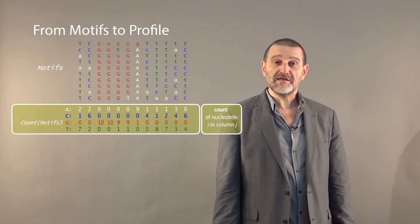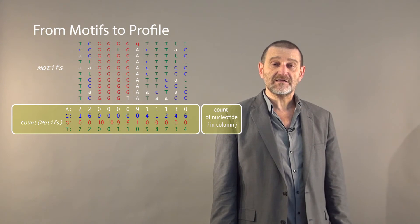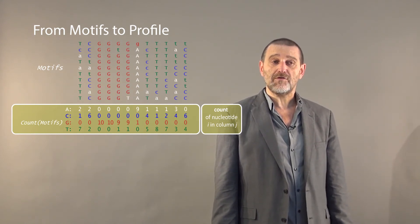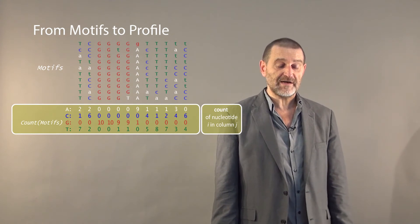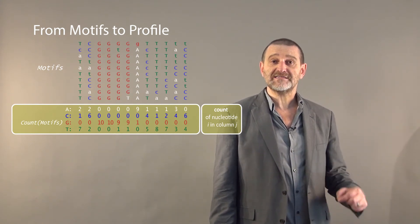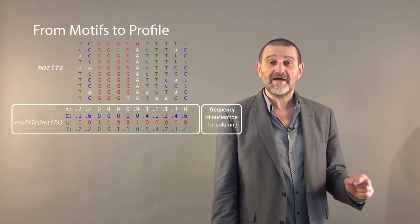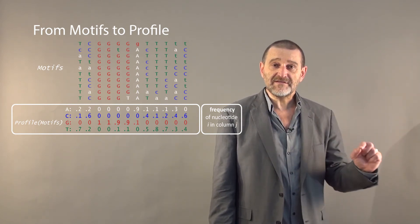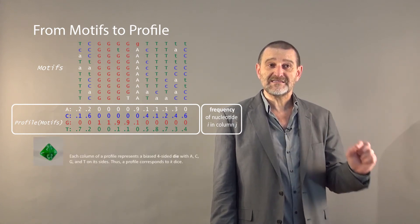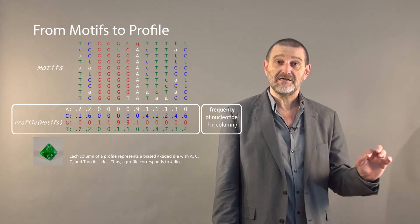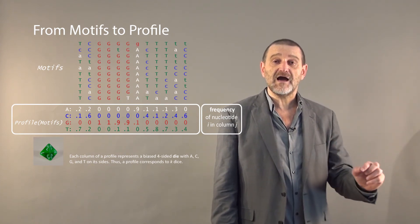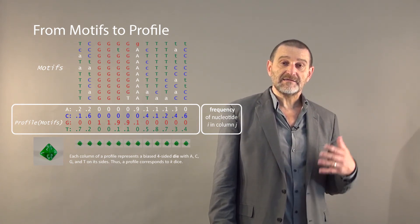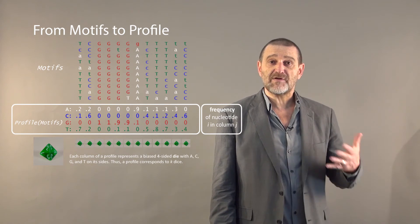Although the median string problem is much faster than the motif finding problem, it's still slow if we search for long motifs, and we will figure out how to deal with such motifs later. Our last topic in this segment is greedy motif search. Given a set of motifs, we already learned how to construct the consensus string. Now let's construct the count matrix, where in every column we have counts of all nucleotides. From this count matrix we can construct the profile matrix, where we have frequencies of nucleotides in every column. These frequencies can be viewed as a four-sided biased die representing a probability distribution.